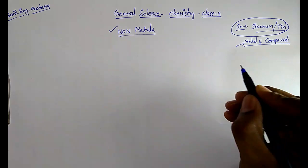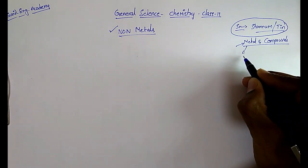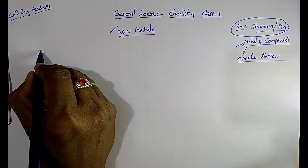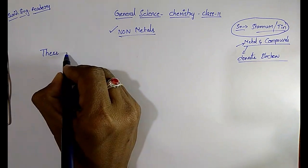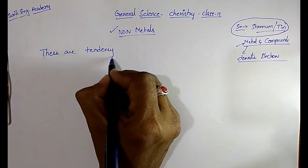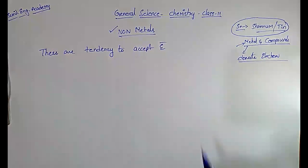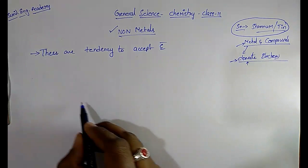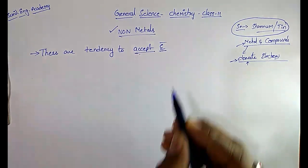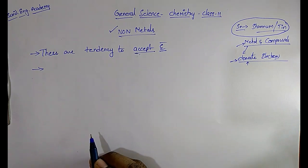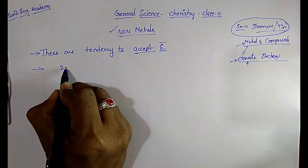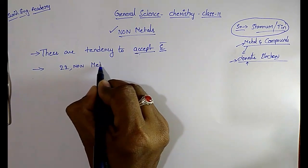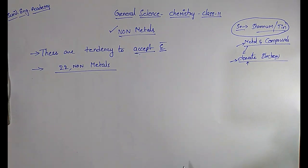In the case of metals, they have a tendency to donate electrons. But in the case of non-metals, they have a tendency to accept electrons. In the modern periodic table, there are nearly 22 non-metals.